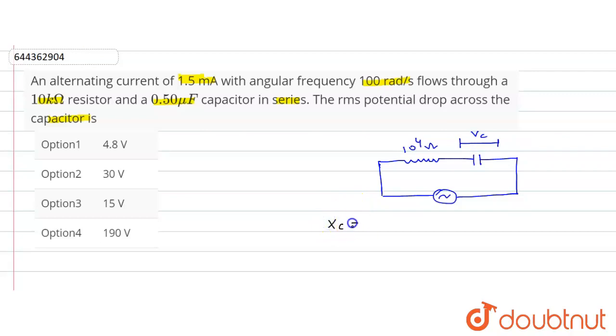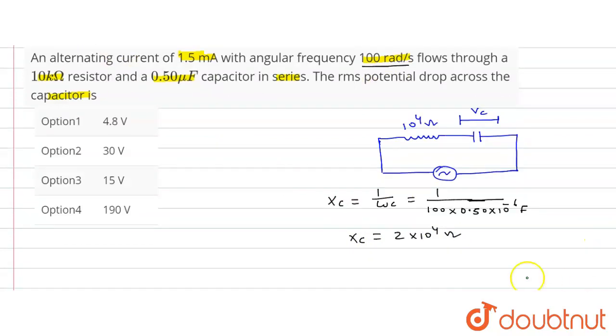So first we will calculate here XC, which will be 1 upon omega C. This will be 1 upon omega value is given 100 radian per second, so 100 into C value is 0.5 micro farad means 0.50 into 10 to the power minus 6 farad. So XC is equal to 2 into 10 to the power 4 ohm. This is the value of XC.